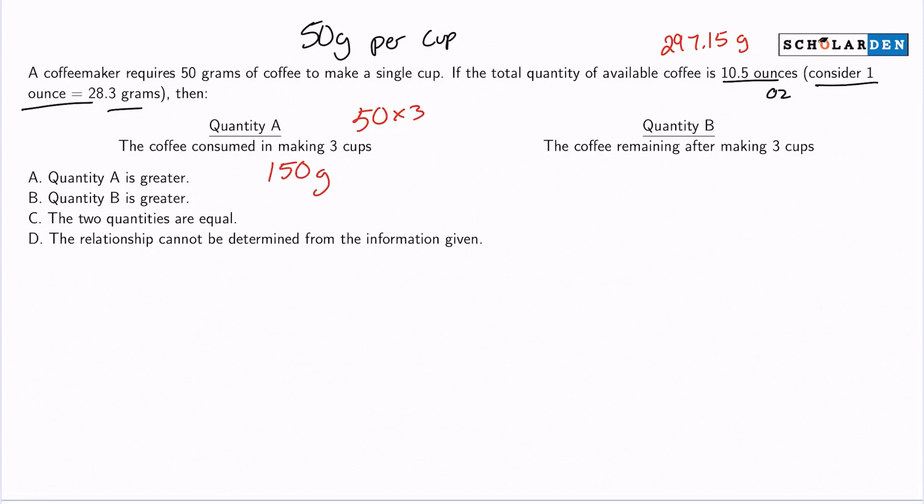Now how much coffee is remaining after making 3 cups? Well, we had a total of 297.15 grams. We'll subtract the 150 grams it takes to make those 3 cups, and we will receive 147.15 grams. So we're comparing these two values, and we can clearly see that quantity A is greater. So there we have it.